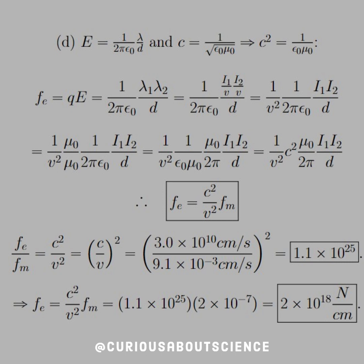So, the force per unit length is q times E, and therefore we know that we have lambda 1, lambda 2. And we put in the definition for lambda with respect to the current, since I is just lambda v. We solve that for lambda,